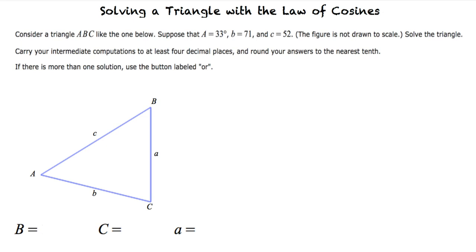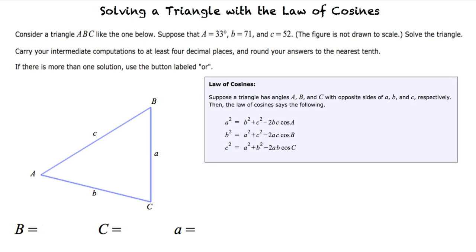What's the Law of Cosines? The Law of Cosines tells us the following. If a triangle has angles A, B, and C, with opposite sides A, B, and C respectively, then the following equations are true.